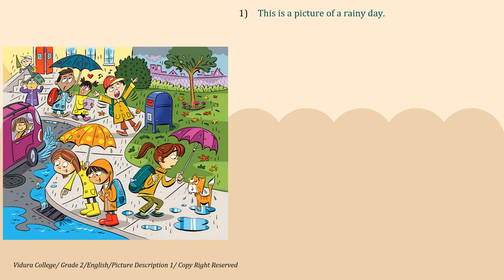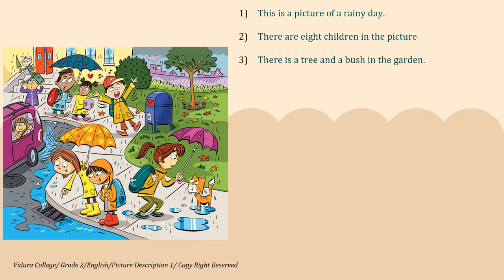First one: this is a picture of a rainy day. When you are writing picture description, you have to write what kind of a situation is mentioned there. Second one: there are eight children in the picture. There is a tree and a bush in the garden. We can see buildings. Next, there are water puddles on the road.